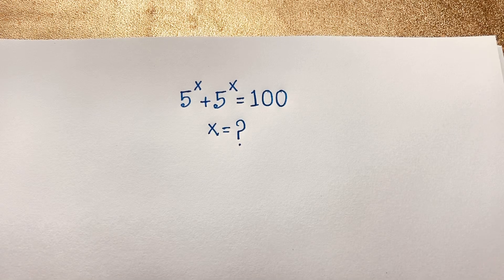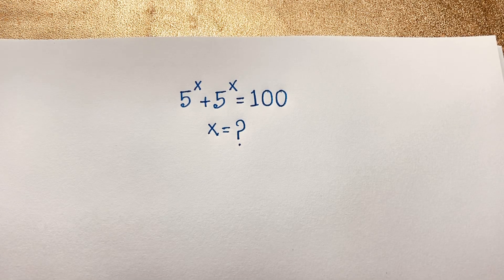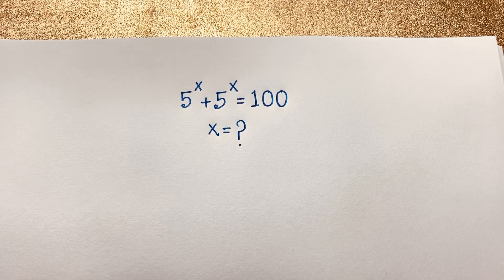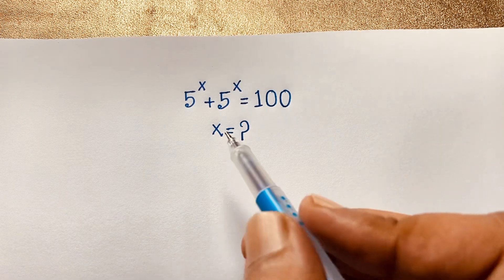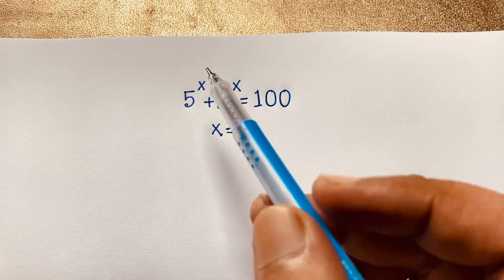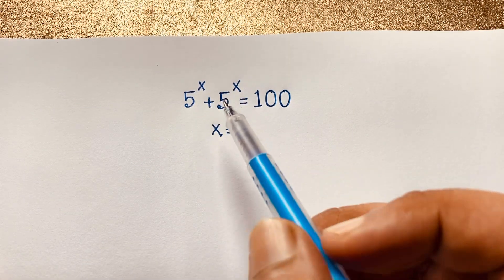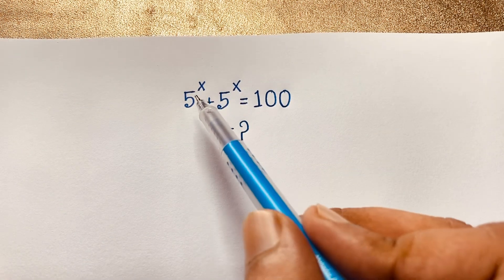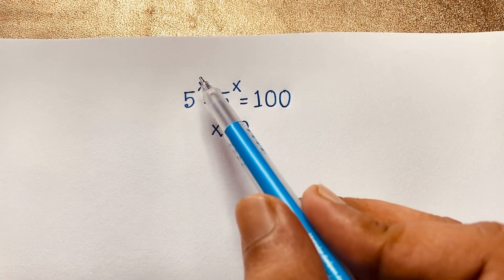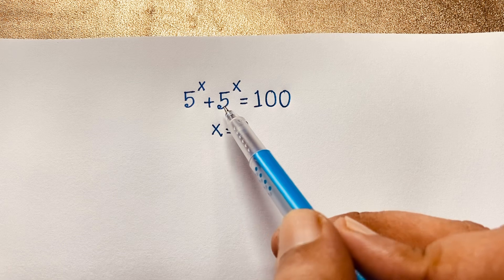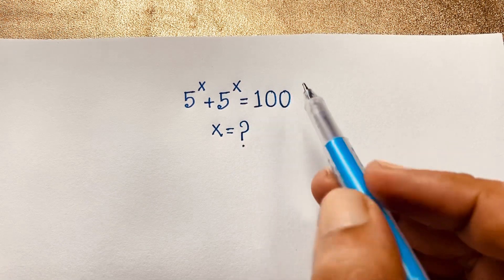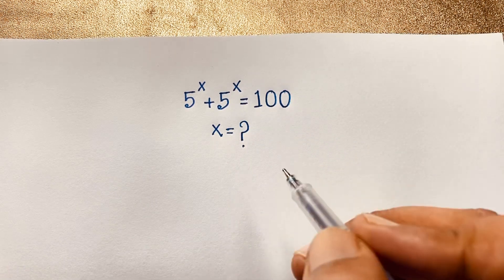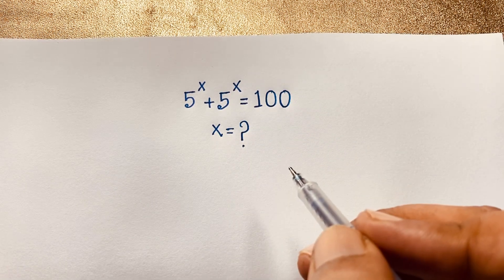Hello everyone, welcome to Russia's classroom. Today we'll solve an interesting exponential math problem — it is an easy math solution. The problem is: 5 to the power x plus 5 to the power x is equal to 100. What is x?